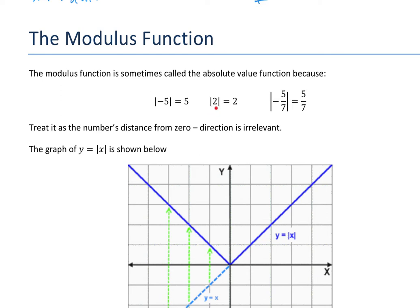Likewise, the modulus of 2 is just 2, because that's how big it is — it's just 2 big. And then the modulus of minus 5 over 7 — how big is it? It is 5 over 7 big, so that is the size of it, it's just 5 over 7.